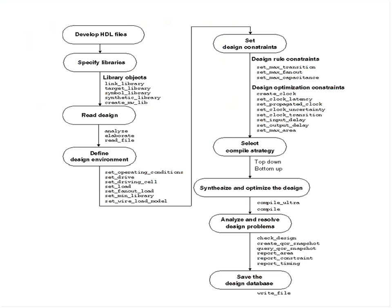If you look at the steps here, what we discussed in the last section was about developing the setup file. We have already seen how to specify the library, what is inside it, and we learned about different variables: link library, target library, and all that. Now we will be looking at the DC command and following this flowchart.